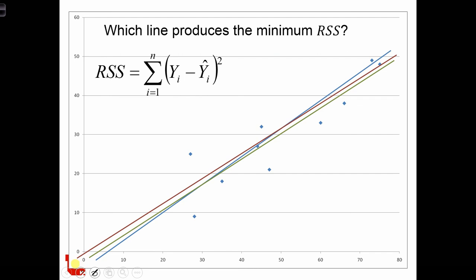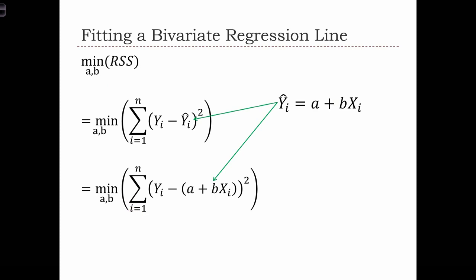In either case, we are going to choose a regression line based on the fact that it will be the line that minimizes the residual sum of squares. So this is just the optimization problem that we have.